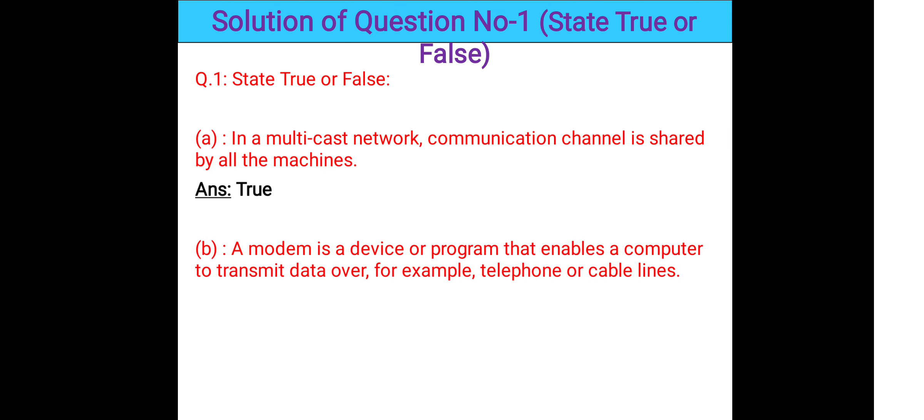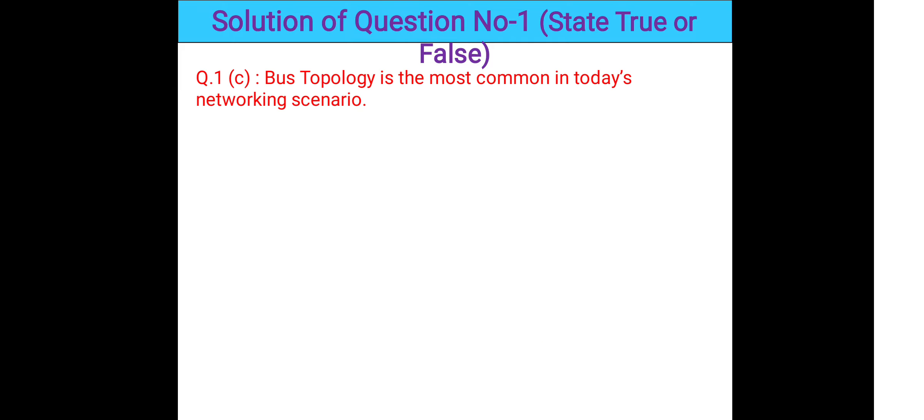Question 1b: A modem is a device or a program that enables a computer to transmit data over, for example, telephone or cable lines. This statement is also true — a modem is a device or a program that enables a computer to transmit data over telephone or cable lines.